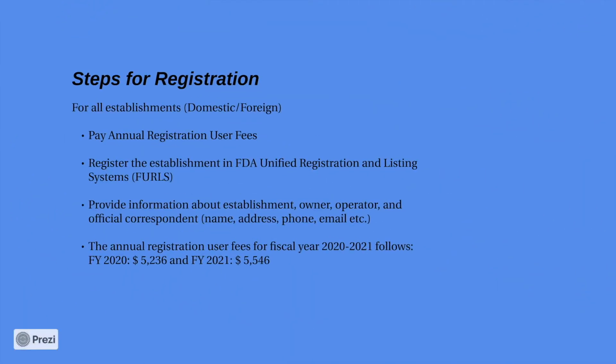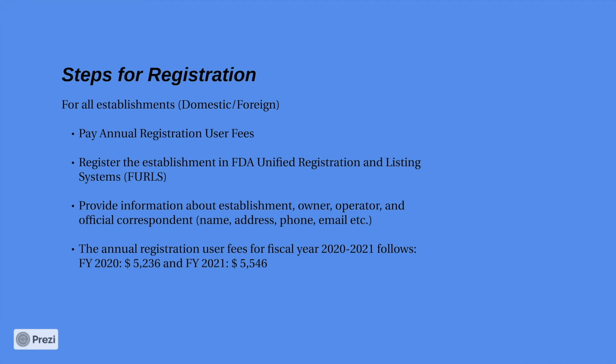Steps for registration: for all establishments, whether domestic or foreign, the following steps are to be followed: paying annual registration user fees, registering the establishment in the FDA Unified Registration and Listing System, and providing information about the establishment owner, operator, or official correspondent.